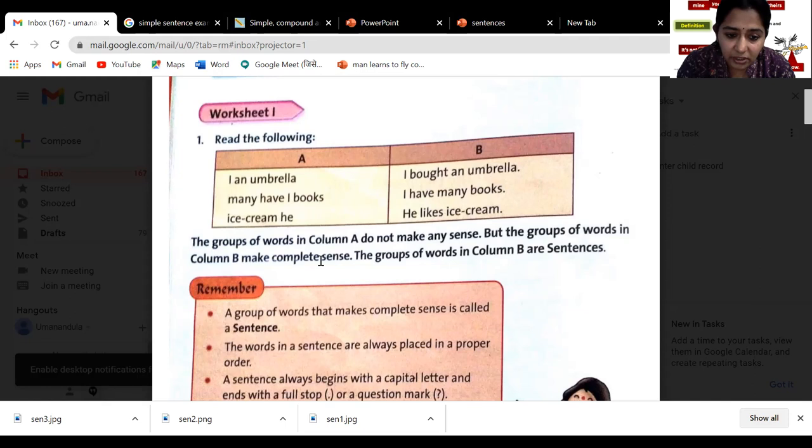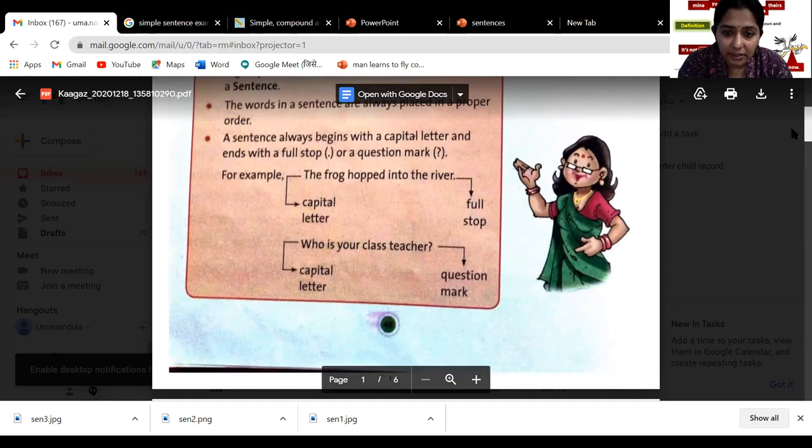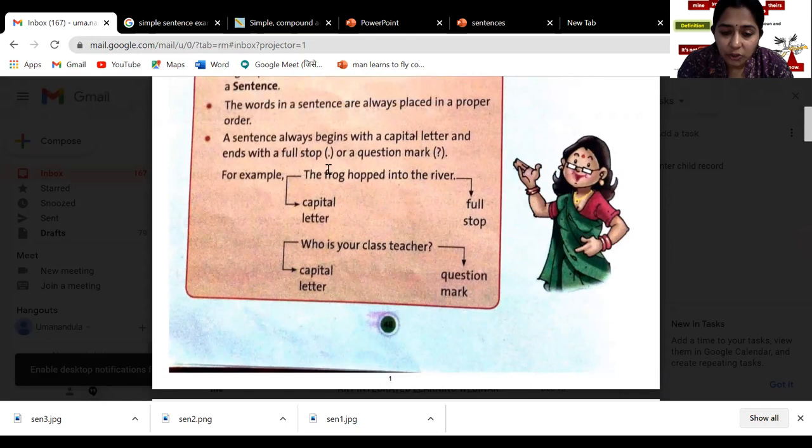So a group of words that make complete sense is called a sentence, and the words in a sentence are always placed in proper order. As I told you, it begins with a capital letter and ends with a full stop or a question mark.